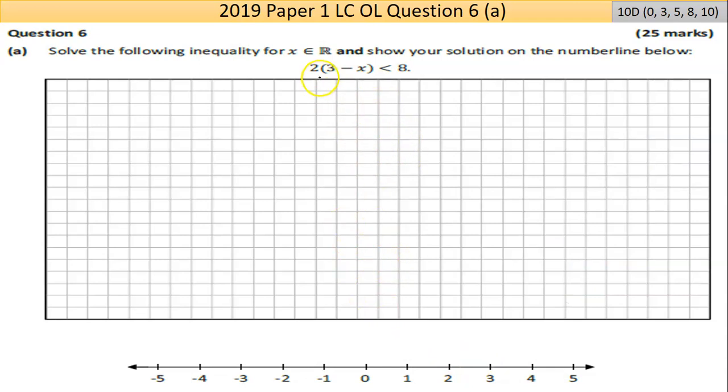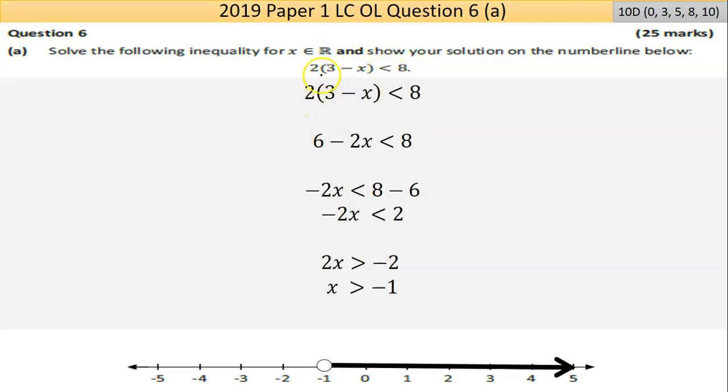I'm going to take this inequality 2(3-x) < 8 and solve it. First, I've written it out. Then I'm going to remove brackets by multiplication: two times three is six, two by negative x gives minus 2x, so we get 6 - 2x < 8. Then you want to solve it. Let's bring the six across - six is positive on the left, becomes negative on the right. So -2x < 8 - 6, which is -2x < 2. Now in this scenario, I want to change the sign in front of the x because I don't want negative 2x.